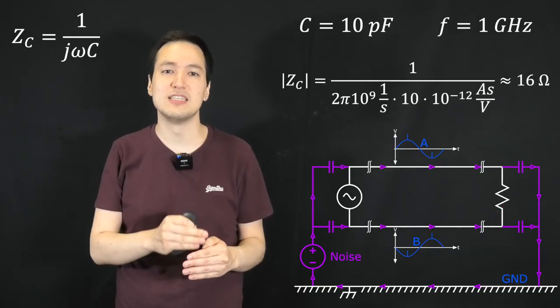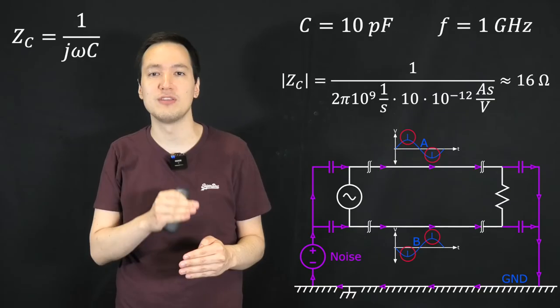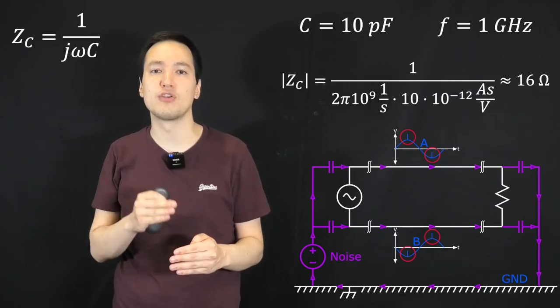Thus, it is possible to measure common mode interference voltages in the microvolt range. In reality, however, the cell phone is not the main contributor to common mode noise.